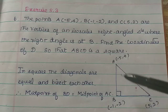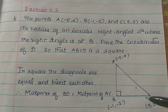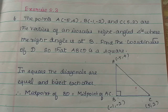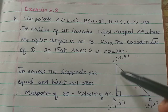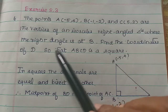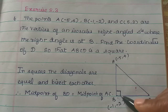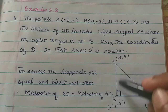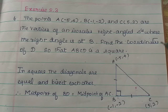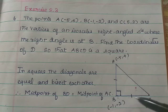The points A, B and C are vertices of an isosceles right angle triangle. In an isosceles triangle, any two sides are equal. The right angle is at B, so these two sides — AB and BC — are equal.